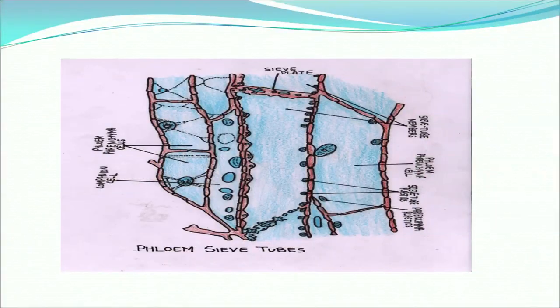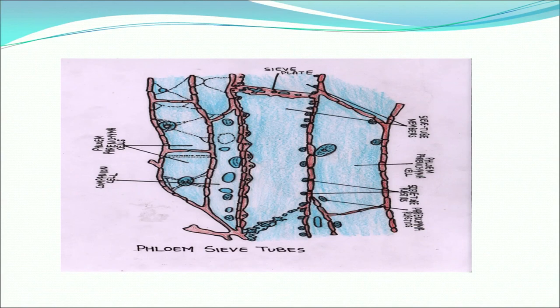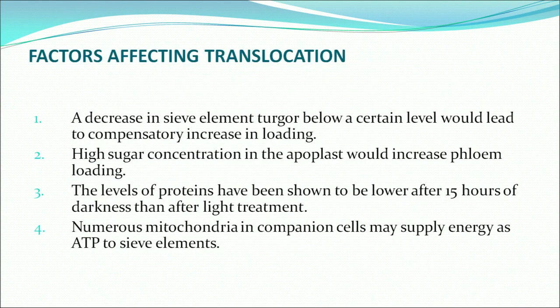The illustration shows how sieve tubes look. Sieve tubes are the main component of phloem. Phloem has five components: phloem parenchyma, phloem fiber, sieve tubes, and companion cells. Sieve plates play a very important role in the translocation of organic solutes. A decrease in sieve element turgor below a certain level would lead to a compensatory increase in loading.